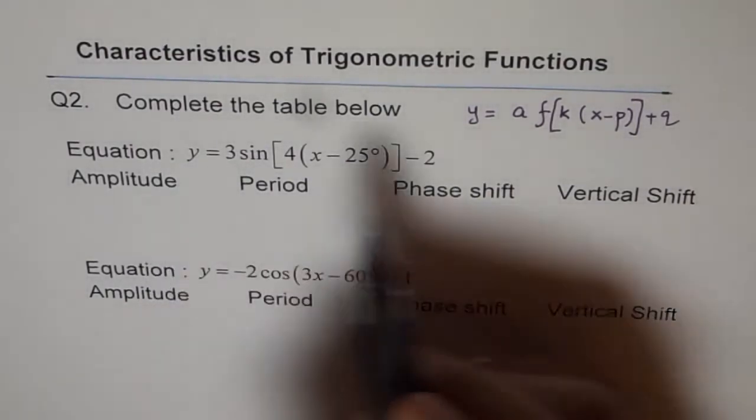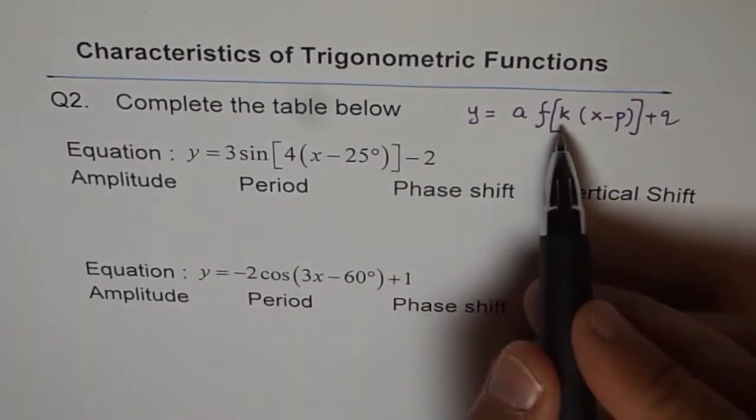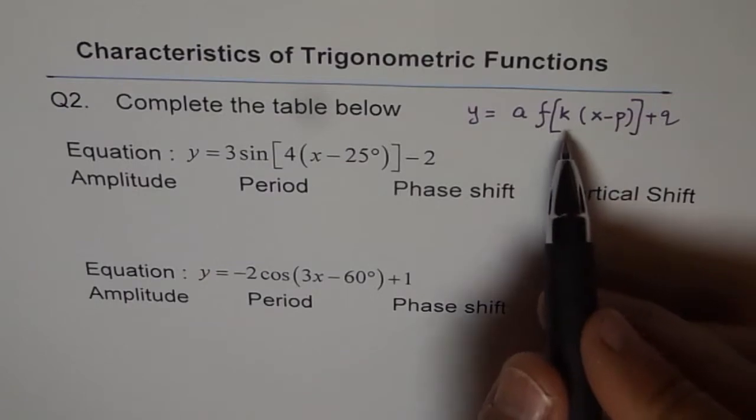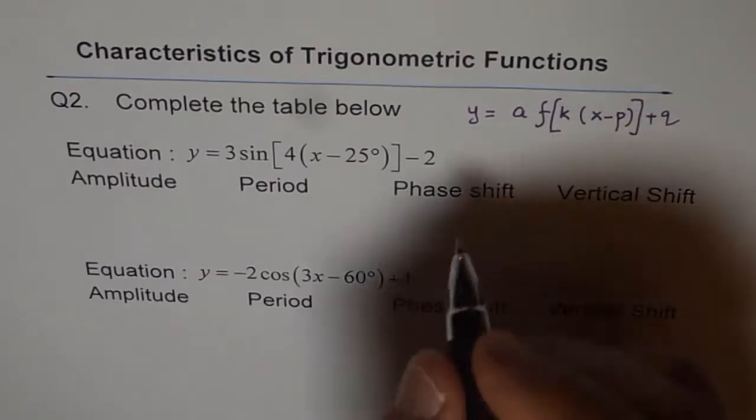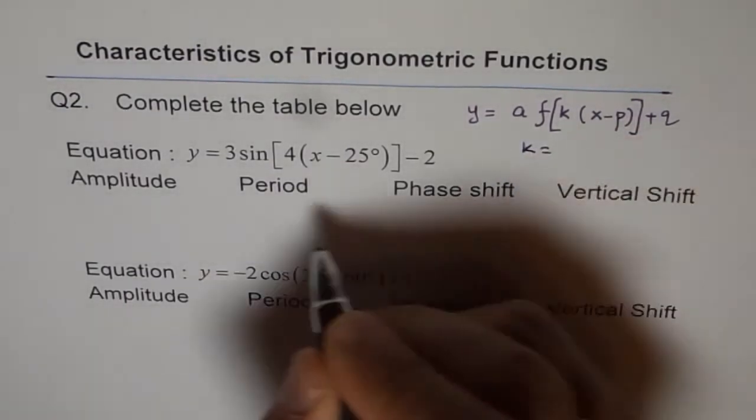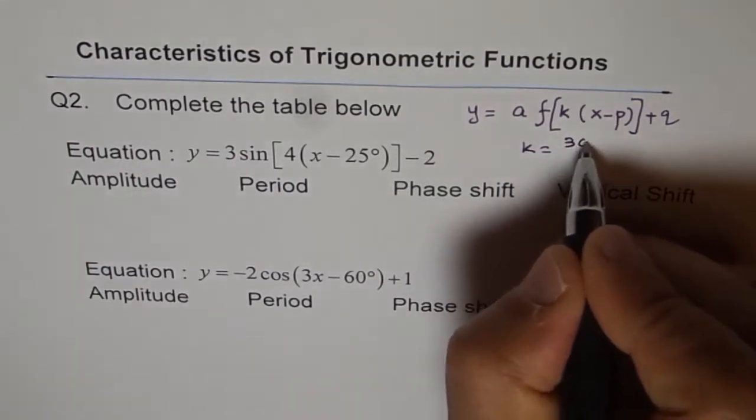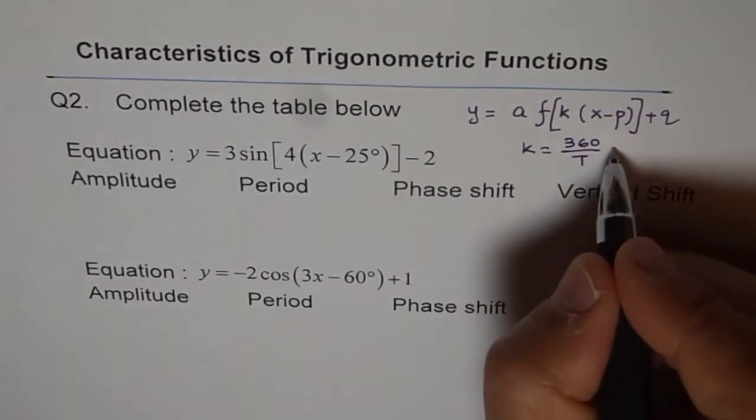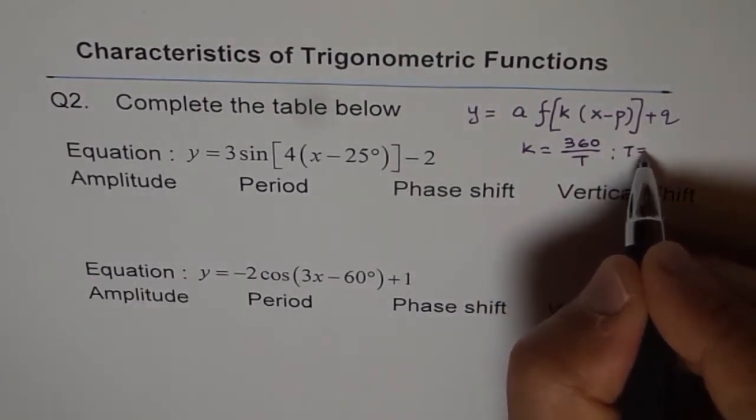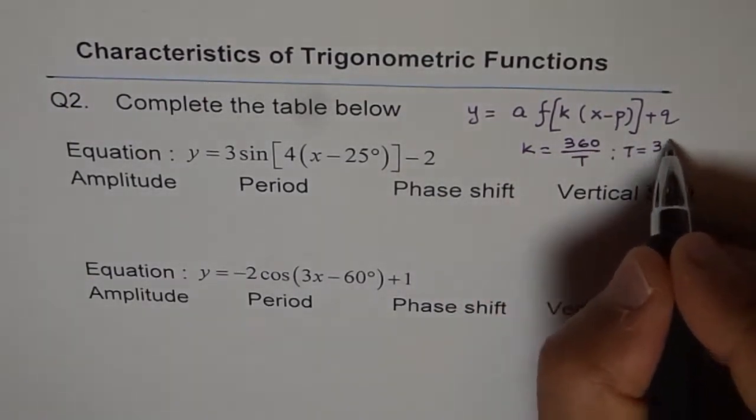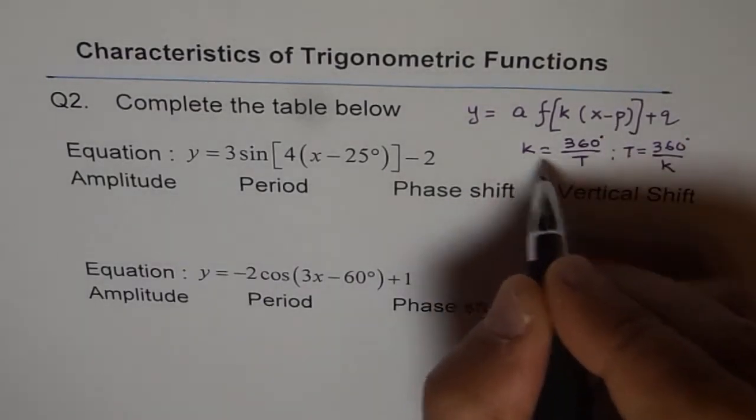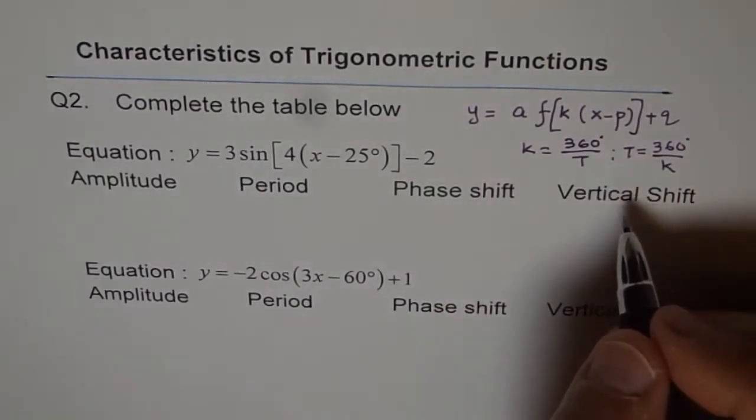Now a is your amplitude. Straight the value goes here. K is number of waves in 2 pi or number of waves in 360. And normally k is related to period as 360 divided by time period. So we can write time period as 360 degrees divided by k. So that is how k and time period are related.